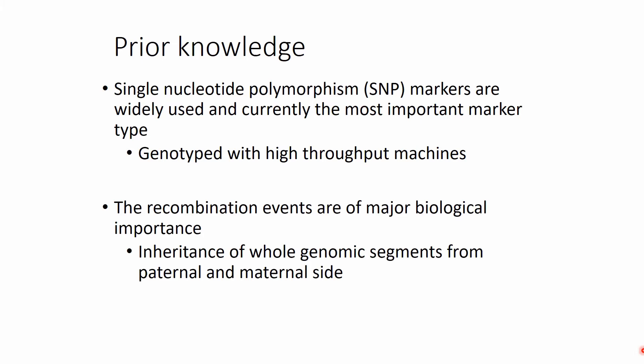The other important piece of information is the existence of recombination events, which are of major biological importance. This means that the nucleotides on our genome are not inherited independently but in the form of shorter or longer genomic segments from the paternal and maternal side.